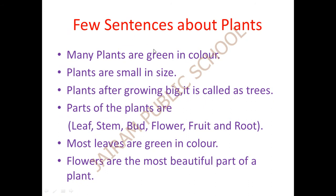Now we can see a few sentences about the plants. Many plants are green in color - the color of the plant is green. Plants are small in size - S-M-A-L-L, small. The color is green G-R-E-E-N, the size is small. Next: plants after growing big are called as trees. T-R-E-E-S, trees. Plants after growing into big are called as trees.